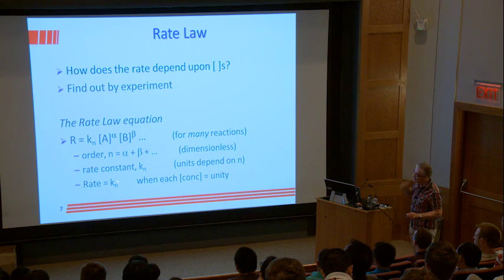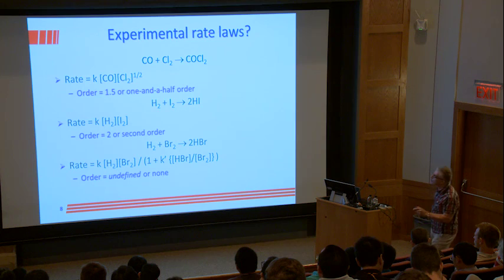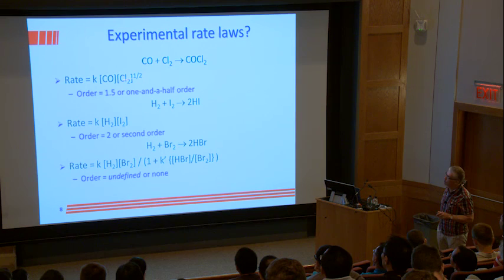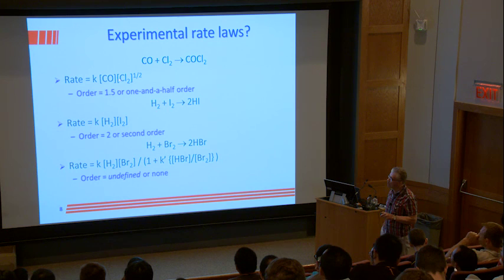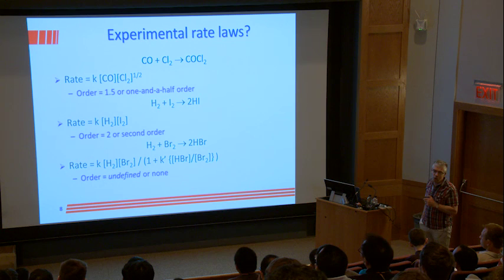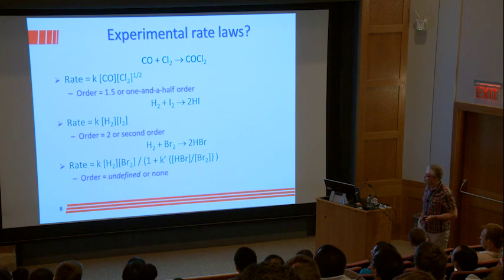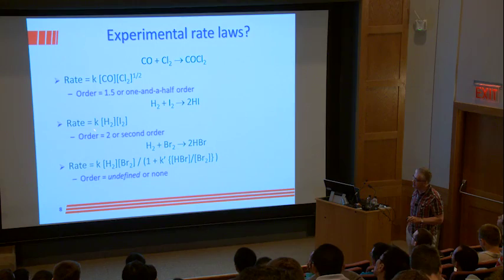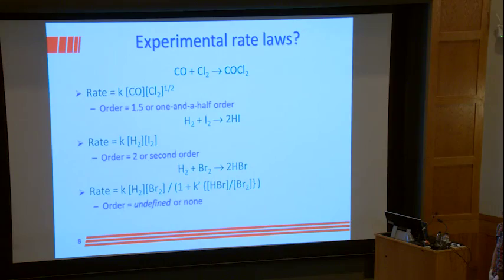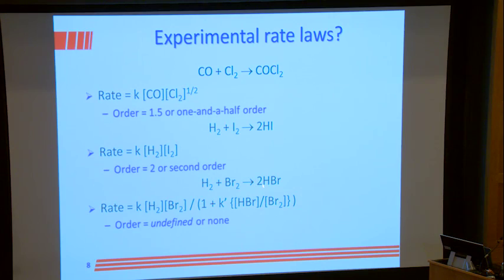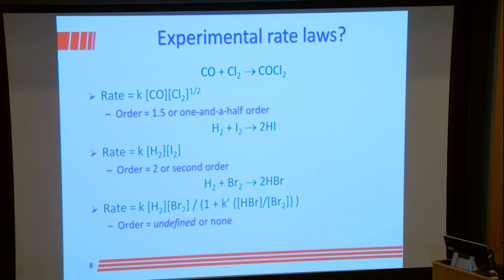Looking at experimental rate laws: CO + Cl₂ → COCl₂ has rate = k[CO]¹[Cl₂]^(1/2), so total order is 1.5. For a similar reaction with Br₂ instead, the rate has a very complicated expression and the order is undefined. The order can only be found by experiment.